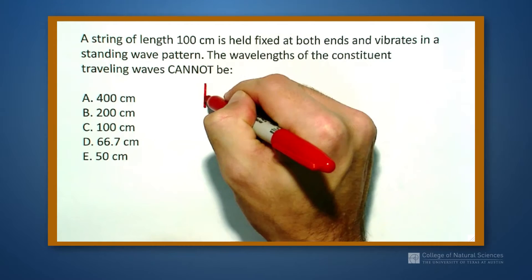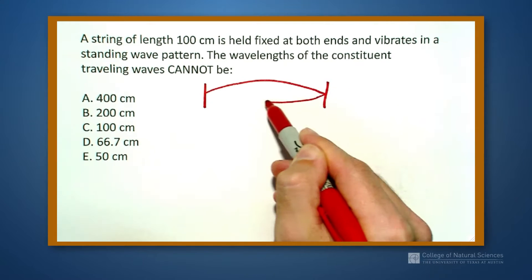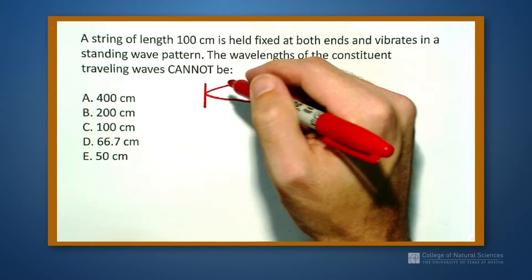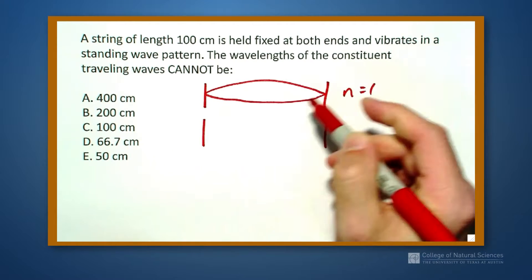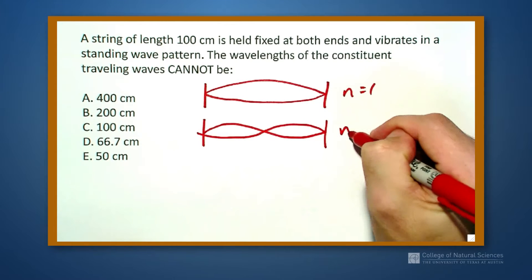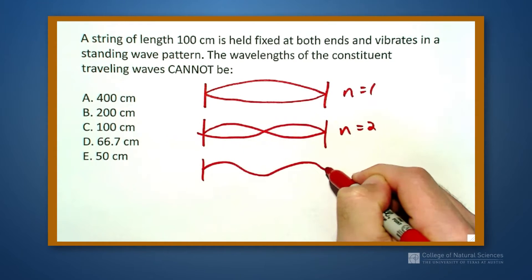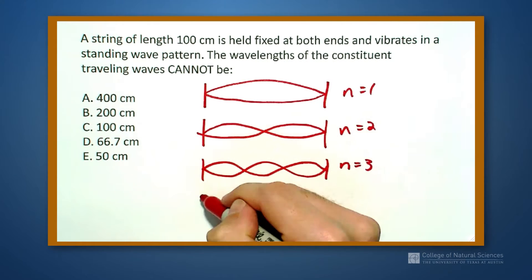Well, let's draw a couple of these because we know that we can have a standing wave that looks like this where all of these distances are going to be the same. So I'm going to draw n equals 1, n equals 2, n equals 3, and let's do n equals 4 just for good measure.